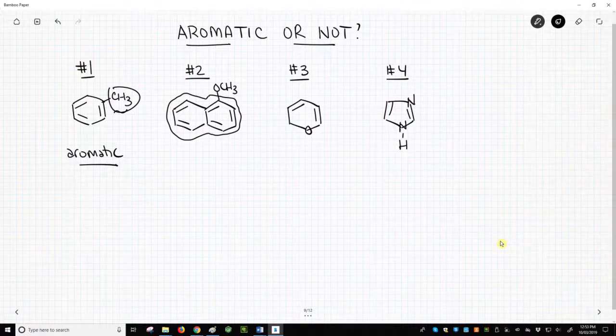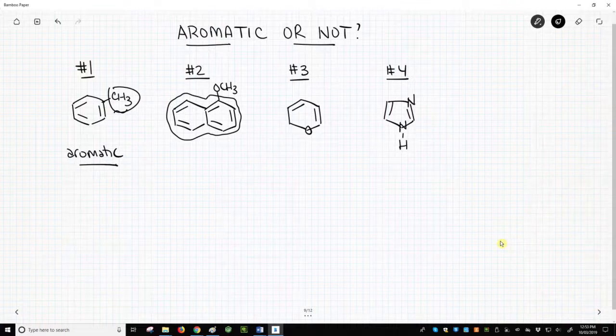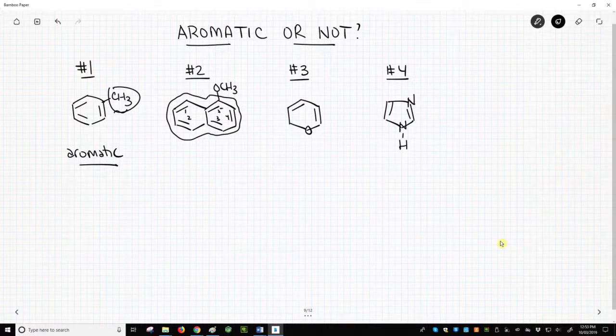The big ring is flat, and all the atoms are sp2 hybridized, so they all have a p orbital. How many electrons in this big ring? We have five pi bonds – one, two, three, four, five – that's ten electrons.